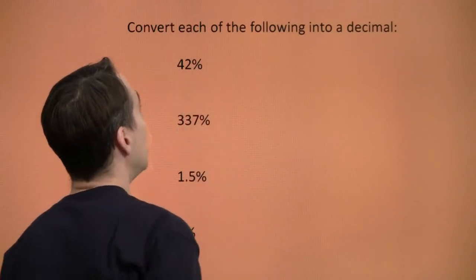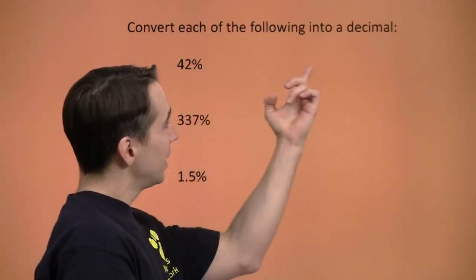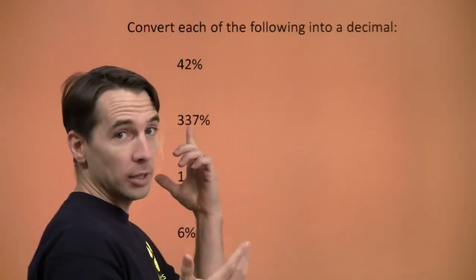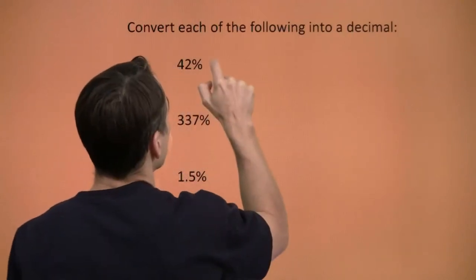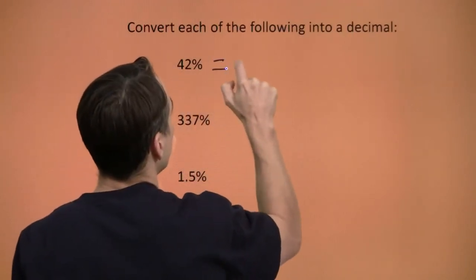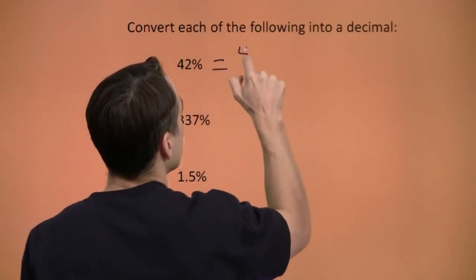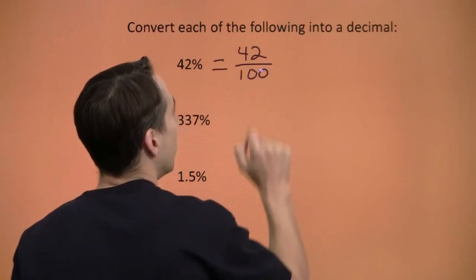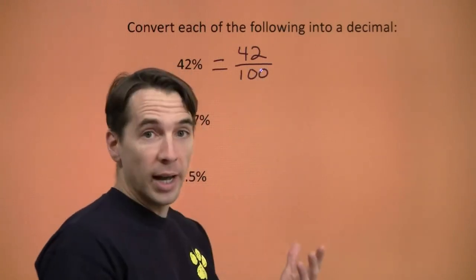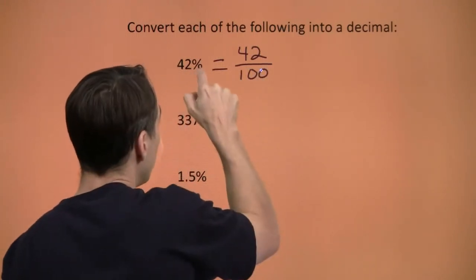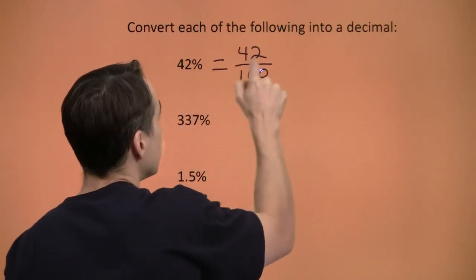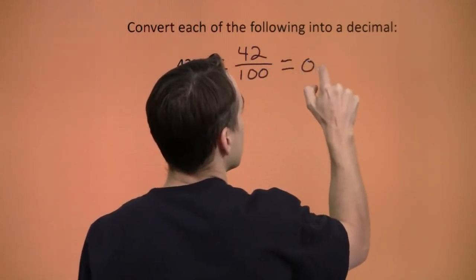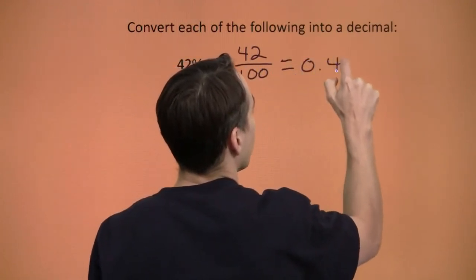We'll start here, turning 42 percent into a decimal. Percent means per hundred, so 42 percent means 42 per 100. We know how to divide by 100 — we move the decimal point two places to the left, and we get 0.42.